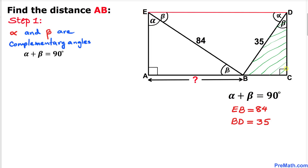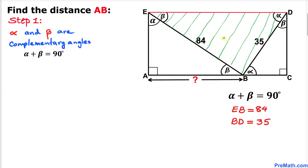Now let's focus on triangle BCD. This is also a right triangle. This angle is beta, so the next angle is beta, and then the remaining angle has to be alpha.